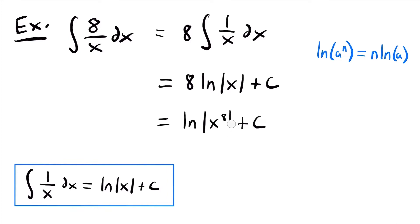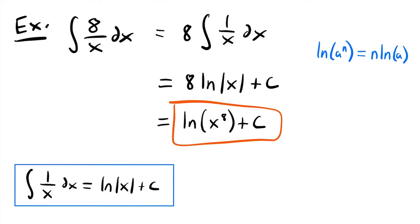We can actually remove the absolute value bars because anything to the 8th power is going to be a positive value. When the power of your function is an even power, it's always going to be positive, so there's no need for those absolute value bars. That would be the most simplified form of the answer. This was the most basic case of using the log rule of integration to integrate a rational function, but we can use this rule for more complicated functions as well.